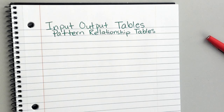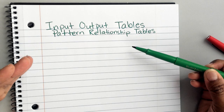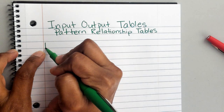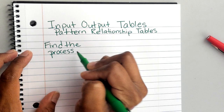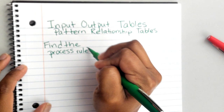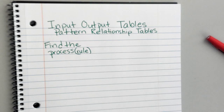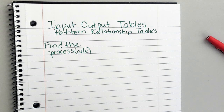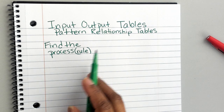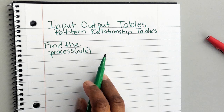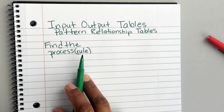In pattern relationship tables or input output tables, do it exactly as you see me do it — skip a line if I skip a line. We're going to put: you need to find the process. The process means how to get to the other side, and it's also known as the rule. When you see parentheses next to a word, that means they're telling you what that word means. So process is basically a rule — you have a process to get to school: you might ride the bus, the car, walk, or ride your bike. That's how it is with input output tables — there's a process to get to the other side.